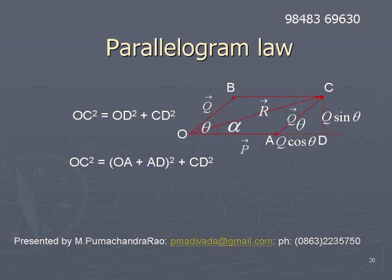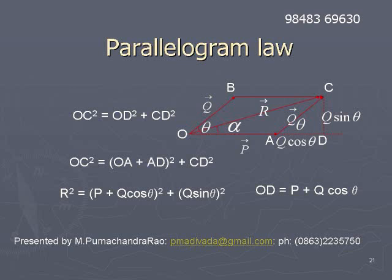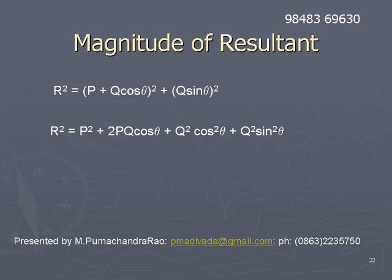Since OD = OA + AD, we have OC² = (OA + AD)² + CD². Substituting OD = P + Q·cos(theta) and CD = Q·sin(theta), we get R² = (P + Q·cos(theta))² + (Q·sin(theta))².